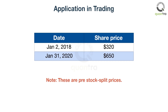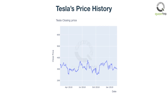Let's try to understand the reason with the help of an example. Tesla started the year 2018 around the $300 mark, and on January 31, 2020, it reached $650. That's double our initial investment. Obviously, everyone would think buying the stock in 2018 was a no-brainer. But Tesla's price graph might make you think otherwise.